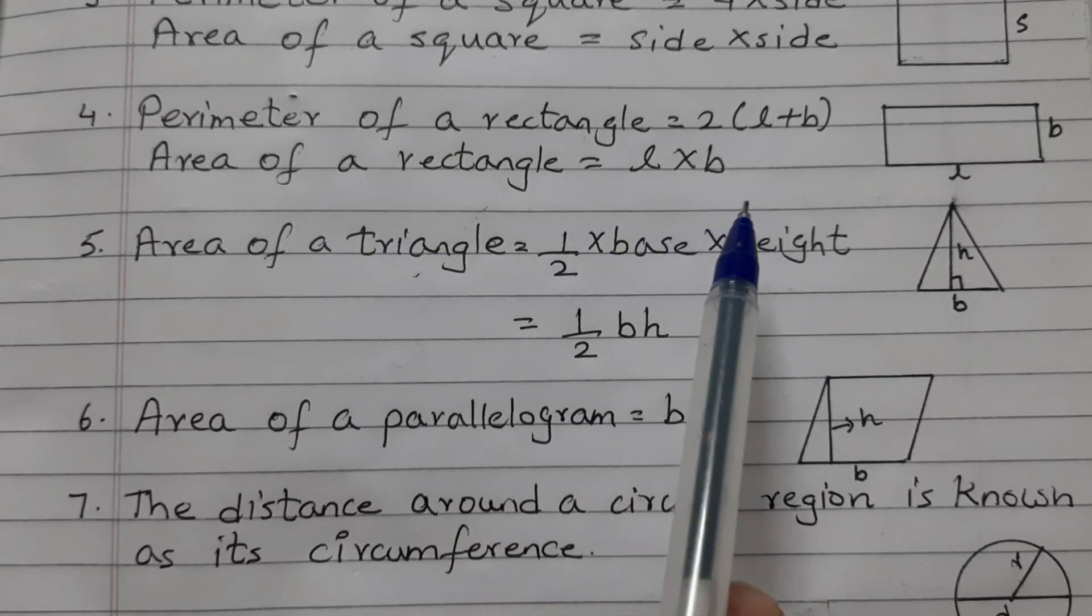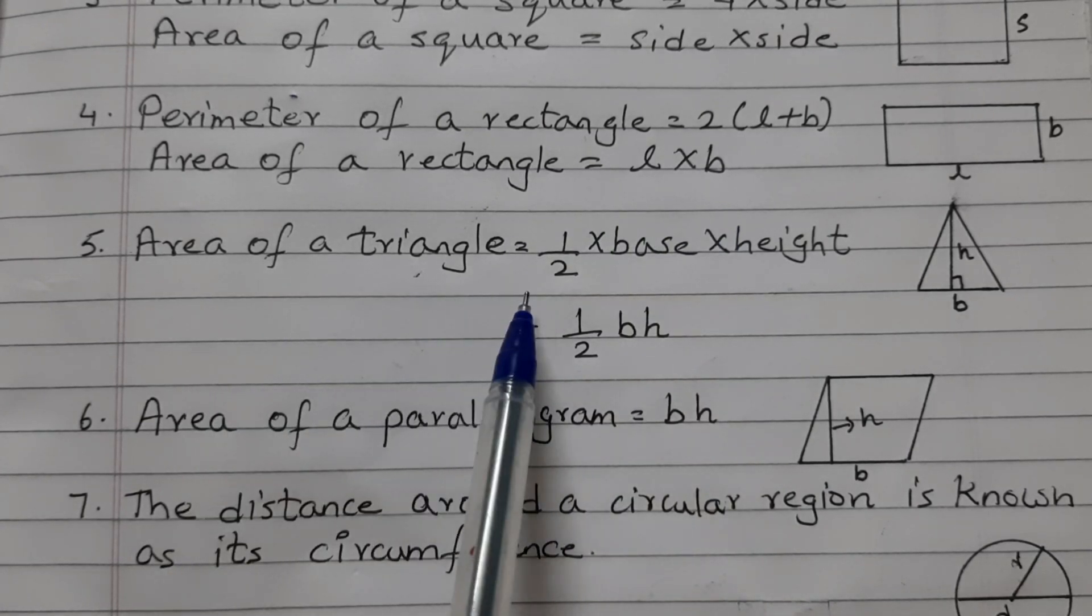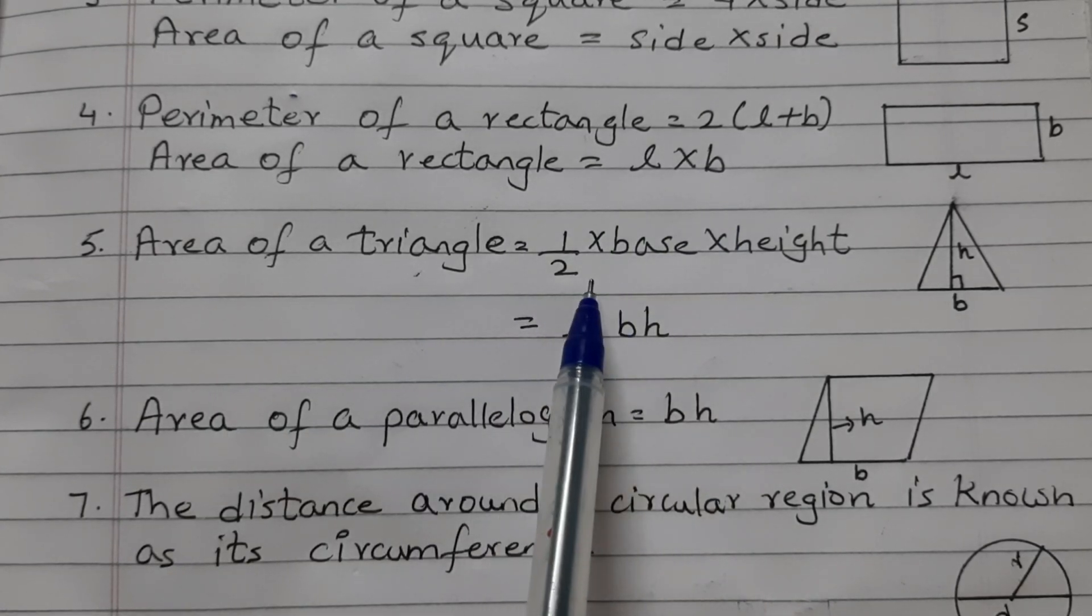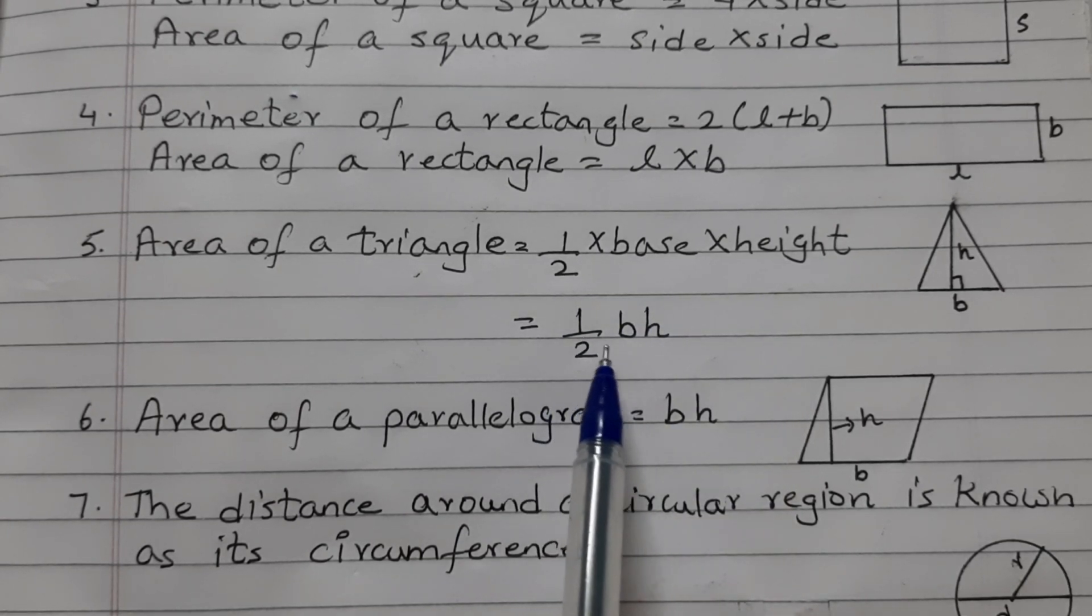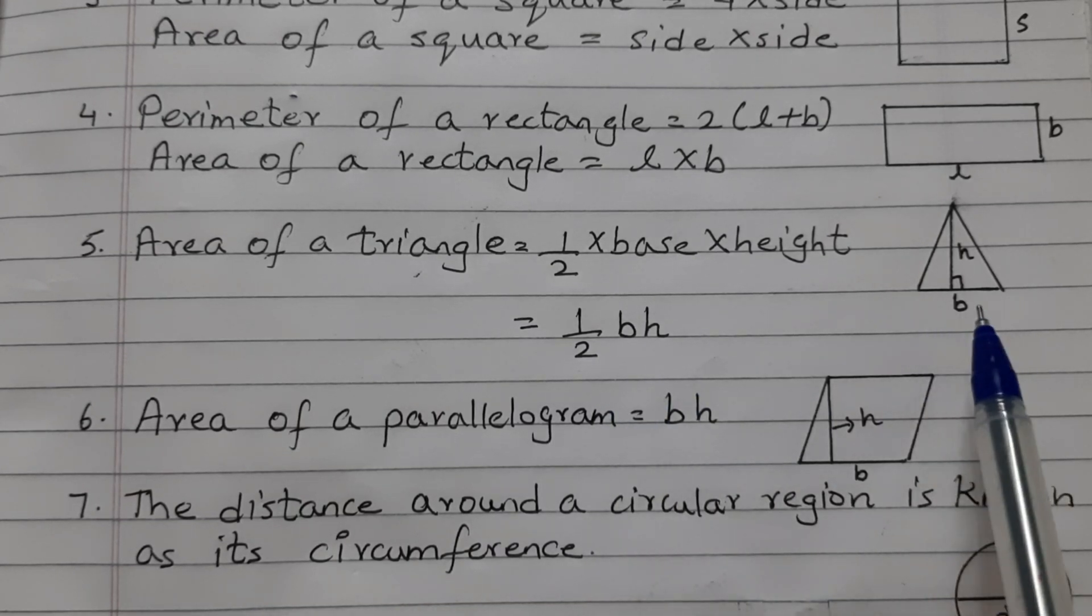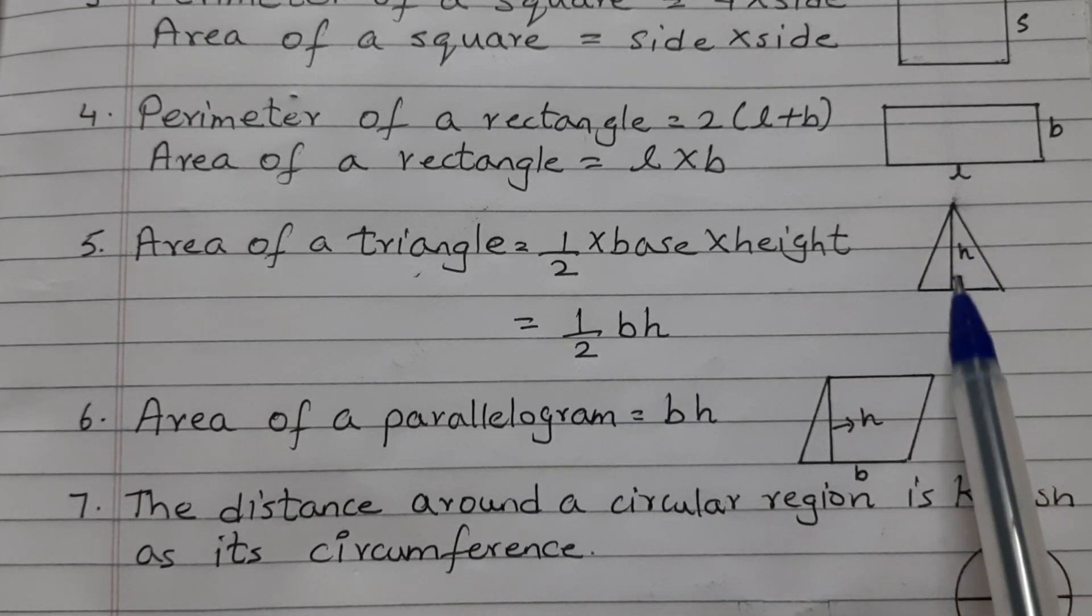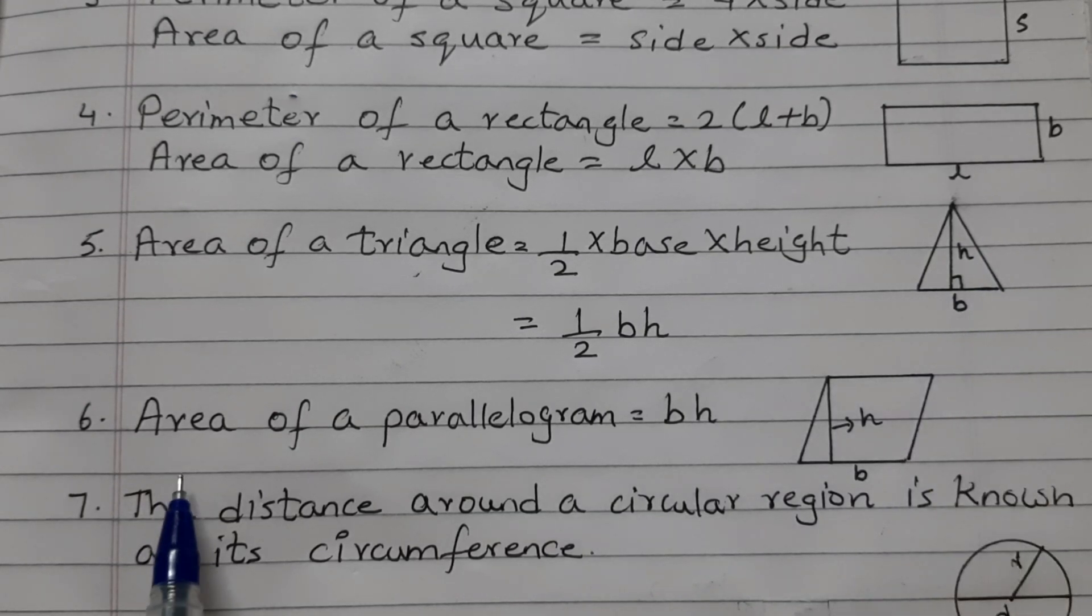Area of a triangle is equal to half into base into height which is written in short 1 by 2 into B into H. Here B is the base and H is the perpendicular from the opposite vertex to the base.